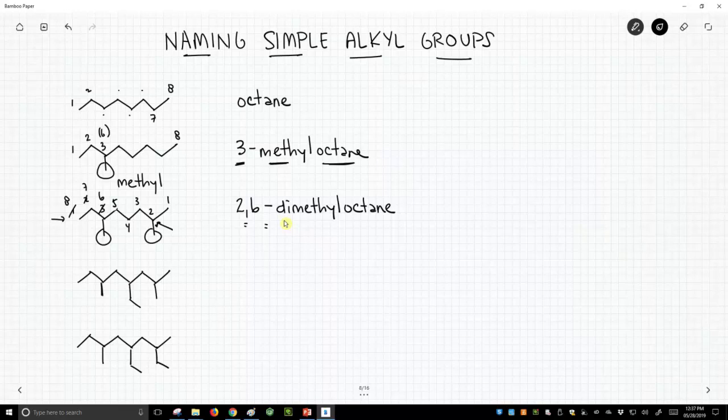This second structure, again, it's going to be an octane. We're going to number from this end first, so our first substituent, our first branch, occurs at carbon two instead of carbon three if we numbered from the left. Now we have two methyls again, but we've introduced an ethyl group, and that ethyl group is at the four position.